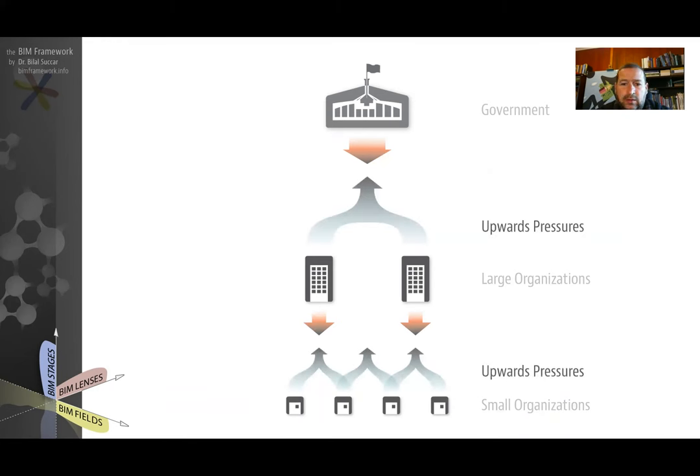Another mechanism is the upward pressure which occurs in the opposite direction. This is where there's an upward pressure from the smaller organizations below which discover an innovative process or approach and then it becomes normalized. Over time it becomes the best approach or the recommended practice. This type of mechanism is called the normative pressure, meaning something becomes normal or becomes the norm.